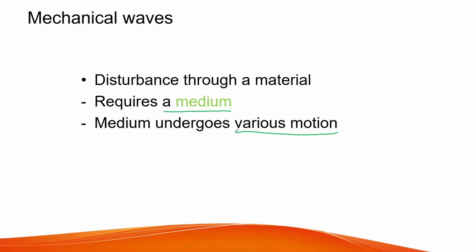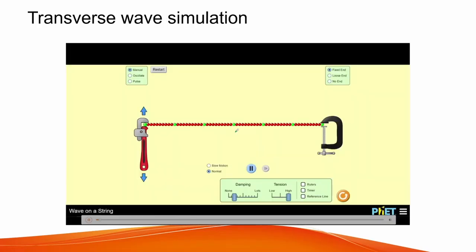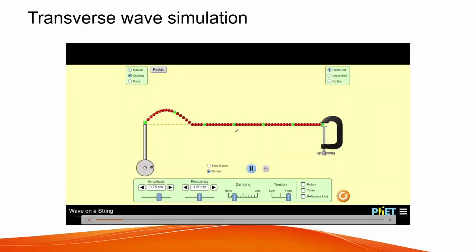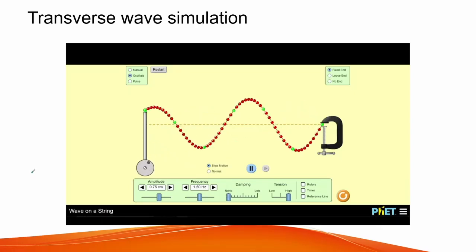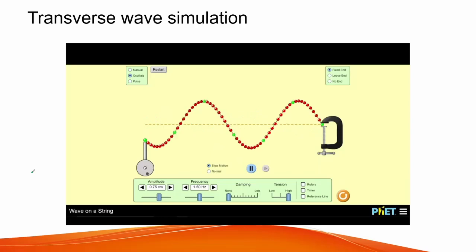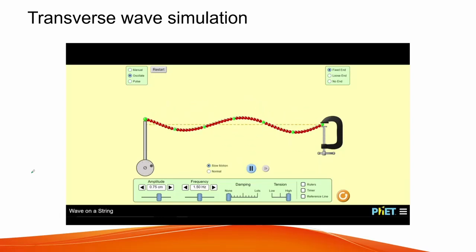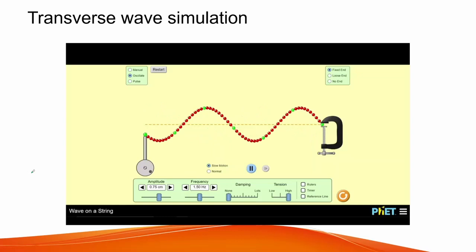The difference between the two is their direction of motion. Shown here we have a simulation of a string. This is an example of a transverse wave, where the oscillator pushes one end of the string up and down producing a wave. The wave then moves toward the right and it reflects back with the same amplitude but opposite in direction.